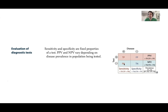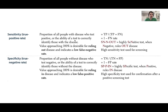Sensitivity is testing all people with the disease — true positives over true positives plus false negatives. Do false negatives have the disease? Yes, the test just came back false. Specificity is testing all people without the disease — true negatives plus false positives in the denominator. False positives don't have the disease; the test just came back incorrect. Positive predictive value looks at all positives; negative predictive value looks at all negatives.